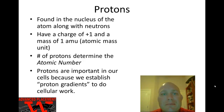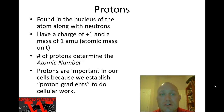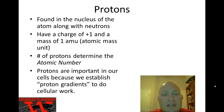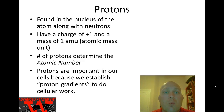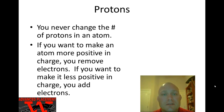Now, atomic structure. The atom consists of three main subatomic particles: protons, neutrons, and electrons. Protons and neutrons are found in the nucleus and are approximately the same size. Electrons orbit outside the nucleus and are about 2,000 times smaller. Protons have a charge of plus one and a mass of one atomic mass unit. The number of protons in an atom gives you the atom's atomic number — so seven protons means an atomic number of seven.